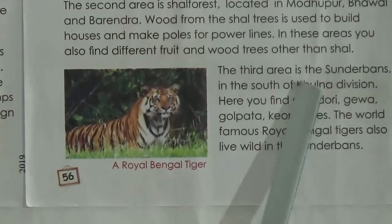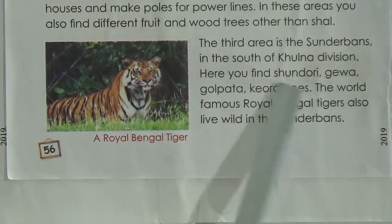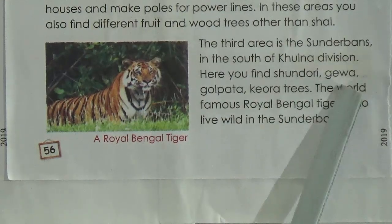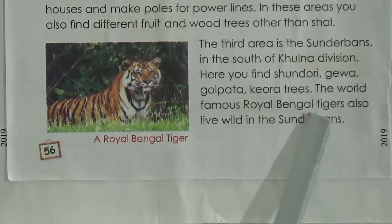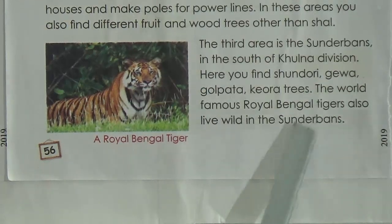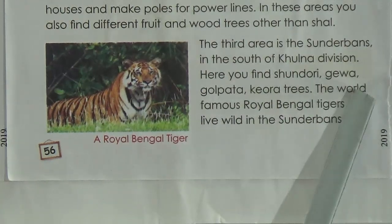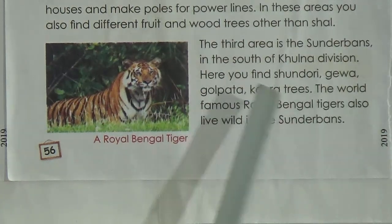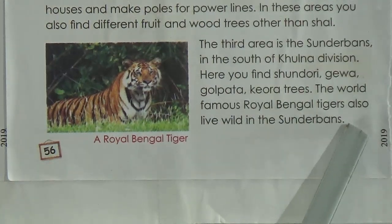The third area is the Sundarbans in the south of the Khulna division. Here you find sunduri, gawa, gol pata, and keora trees. The world-famous Royal Bengal Tiger also lives in the Sundarbans.